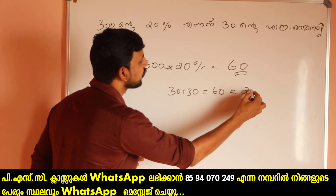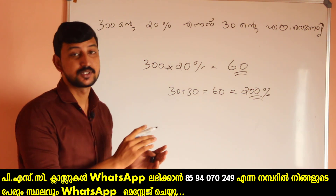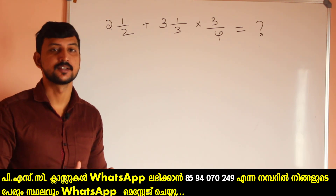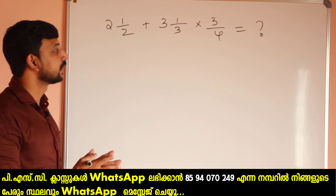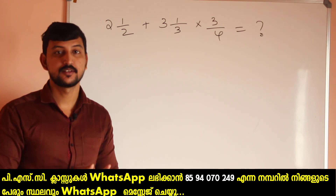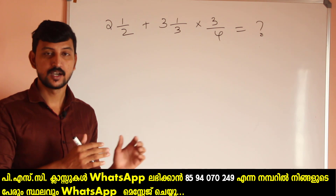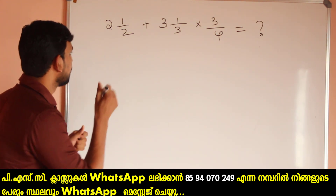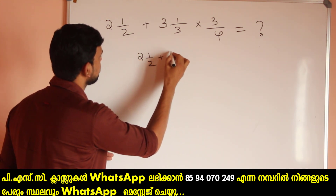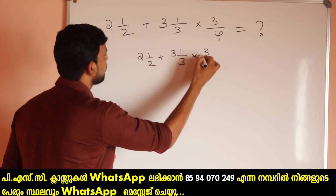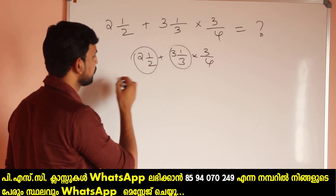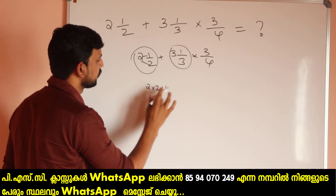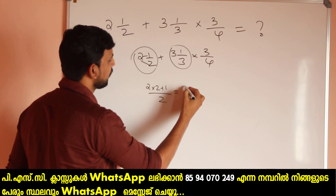The first thing is 200 percent. 30 plus 30 is 60. 30 plus 30 is 60. The second thing is: 2, 1 by 2 plus 3, 1 by 3, 3 by 4. 2, 1 by 2 plus 3, 1 by 3, 3 by 4. The second thing is 1 by 3, 2 by 3, 3 by 4 plus 5 plus 6. We have to write 2 into 2 — that is 4, 4, 4 plus 1. 2 into 2 plus 1, 2 into 2. Then we have to write 2 into 2 — 4, 4 plus 1, 5 by 2.